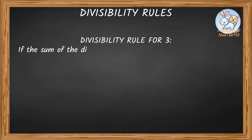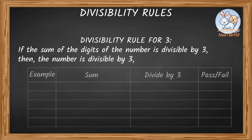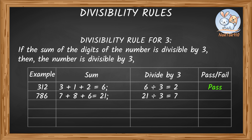If the sum of digits of the number is divisible by 3, then the number is divisible by 3. For example, 312: 3 plus 1 plus 2 equals 6, and 6 is divisible by 3, which means 312 is also divisible by 3. For 786: 7 plus 8 plus 6 equals 21, and 21 divided by 3 is 7, so 786 is divisible by 3.